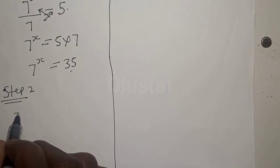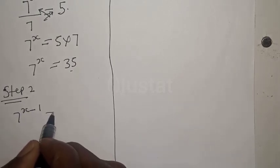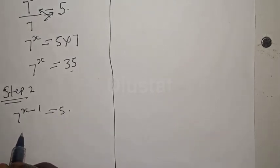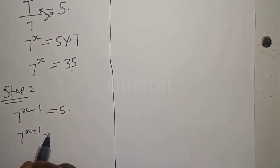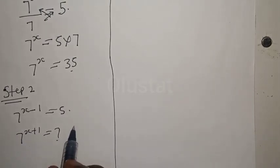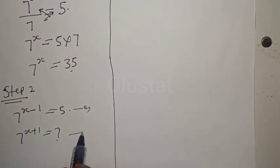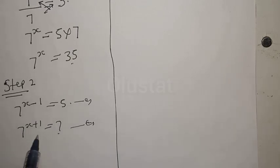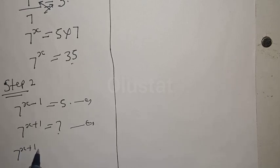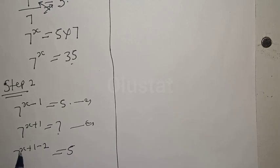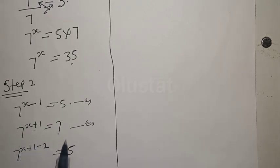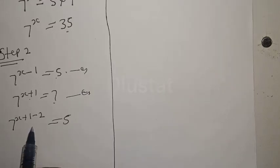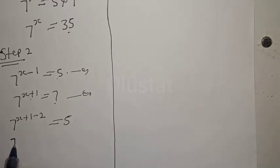In step two, we have 7 raised to power x minus 1 is equal to 5, and 7 raised to power x plus 1 is unknown. From the second equation, we have 7 raised to power x plus 1. Let's subtract: x plus 1 minus 2 equals x minus 1, so we have 7 raised to power x plus 1 minus 2, which gives 7 raised to power x minus 1, and that is equal to 5.